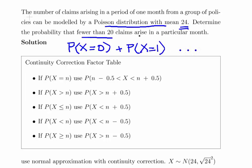All the way, where X is the number of claims, all the way up to the probability of X equals 19. That's not what we want to do, so that's why we use a normal approximation.